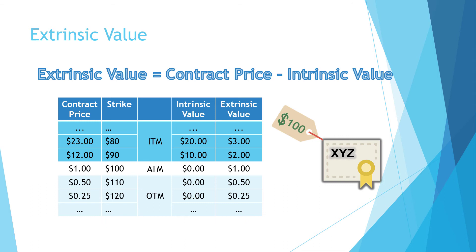For strikes 100, 110, and 120, there is no intrinsic value associated with at-the-money and out-of-the-money strikes, so the contract price is entirely the extrinsic value. We have extrinsic value of $1 for strike 100, $0.50 for strike 110, and $0.25 for strike 120. The equation for extrinsic value is: extrinsic value = contract price − intrinsic value.